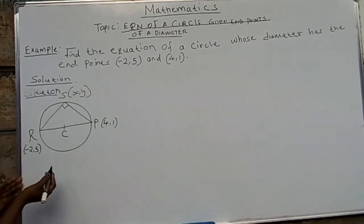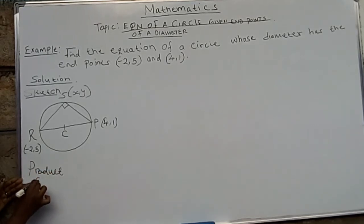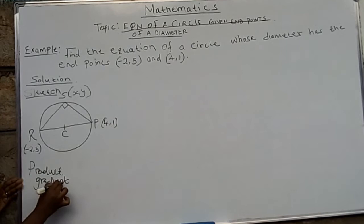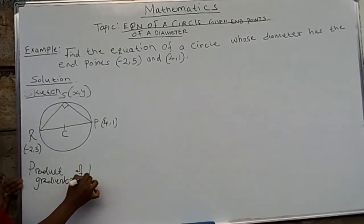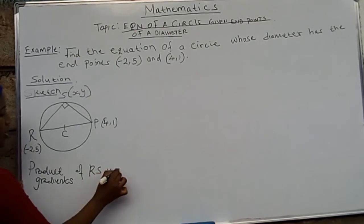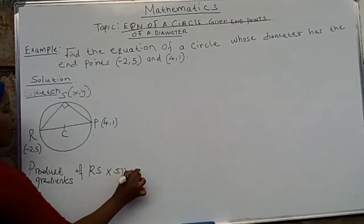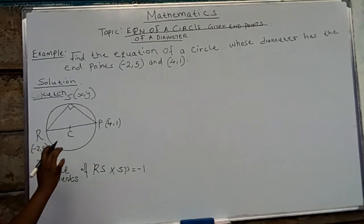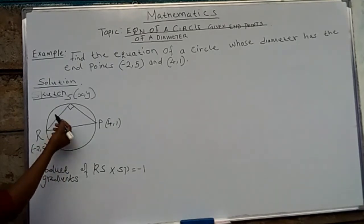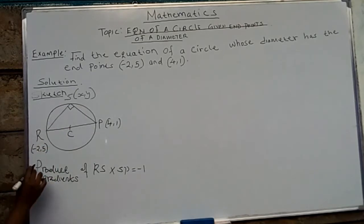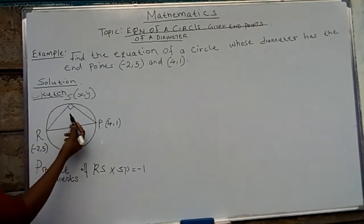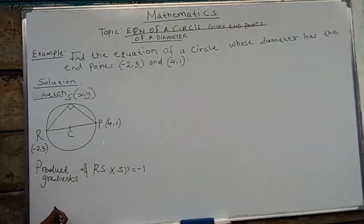So what we are saying is that the product of the gradient of RS times SP shall be -1. So what we are going to do now is get the gradient of RS. The gradient of RS is change in y over change in x, because we know how to find the gradient. Change in y: (5 - y) over (-2 - x).